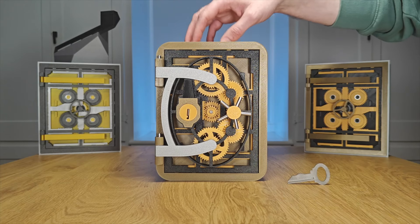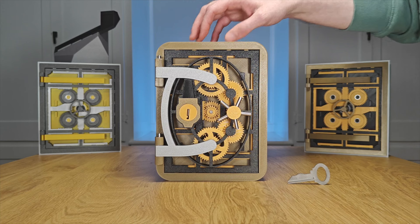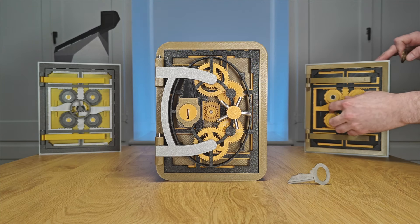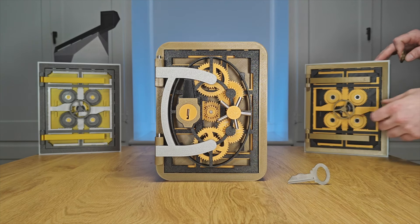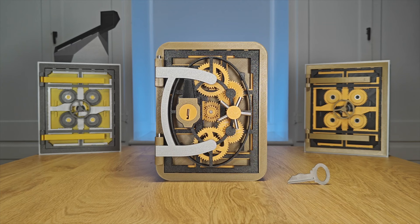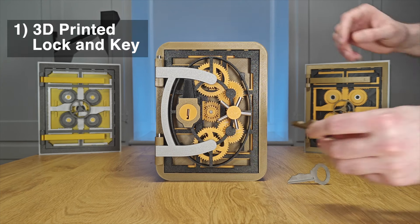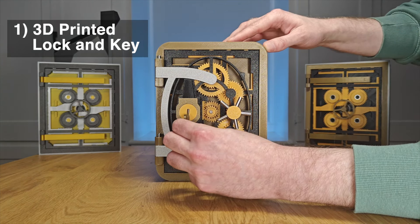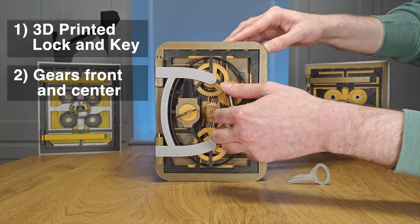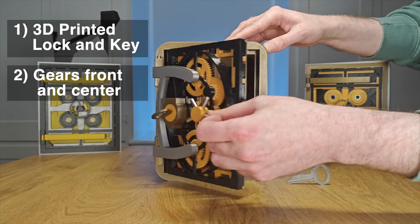In this video I'm going to show you how I built this miniature vault. The design is a sequel to the door I used on my coin sorting vault but this one is a bit more complex. I had three primary goals for this design: one, integrate a 3D printed lock and key; two, put all the gears front and center; and three, design every piece to print without supports.